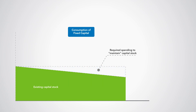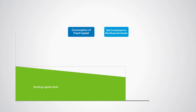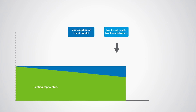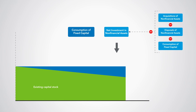If the government does not invest, its level of the capital stock goes down. You will see that consumption of fixed capital is deducted from any gross investment in non-financial assets by the government. So to keep the value of non-financial assets stable, the government would need to invest an equal amount in new non-financial assets as the consumption of fixed capital for existing assets.